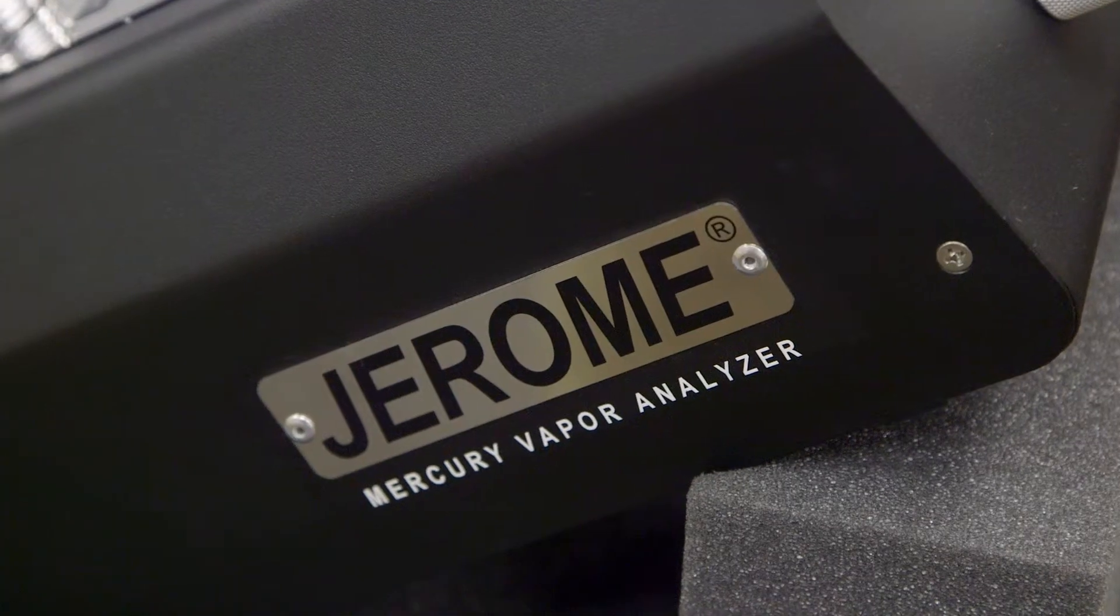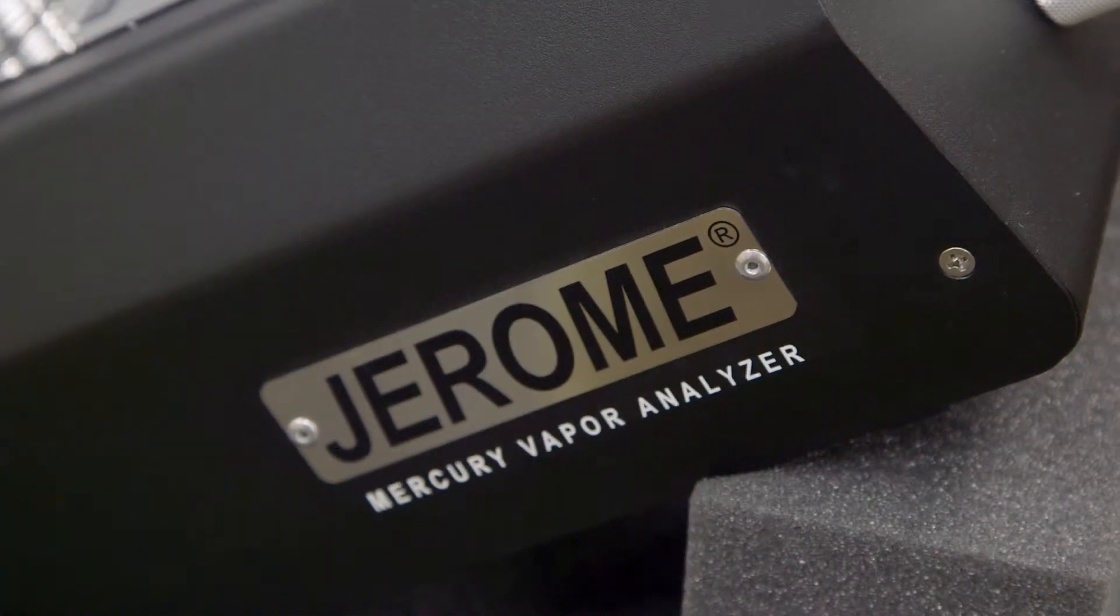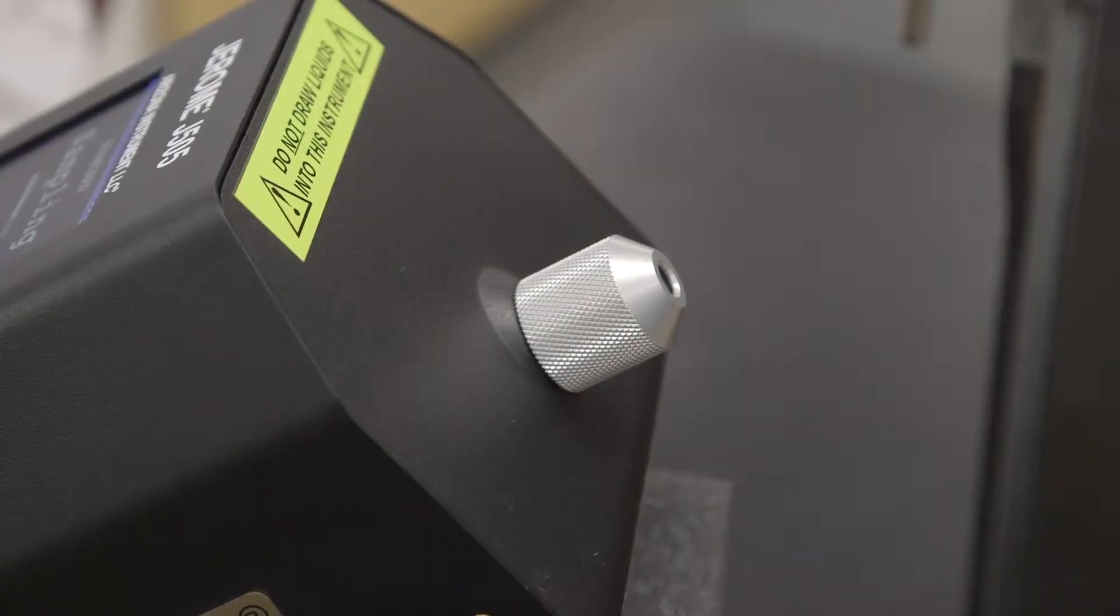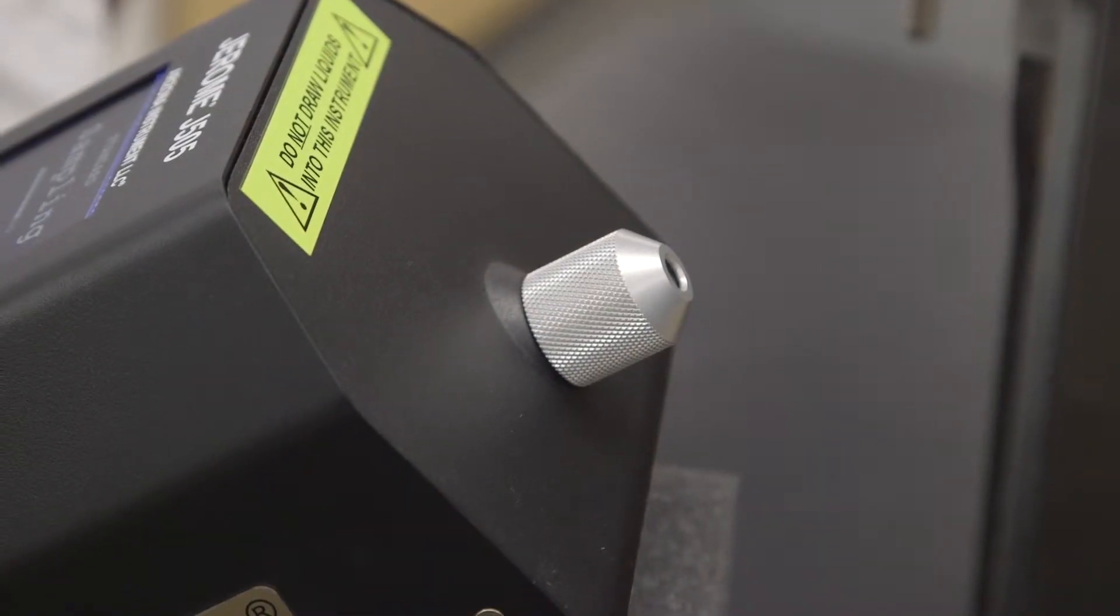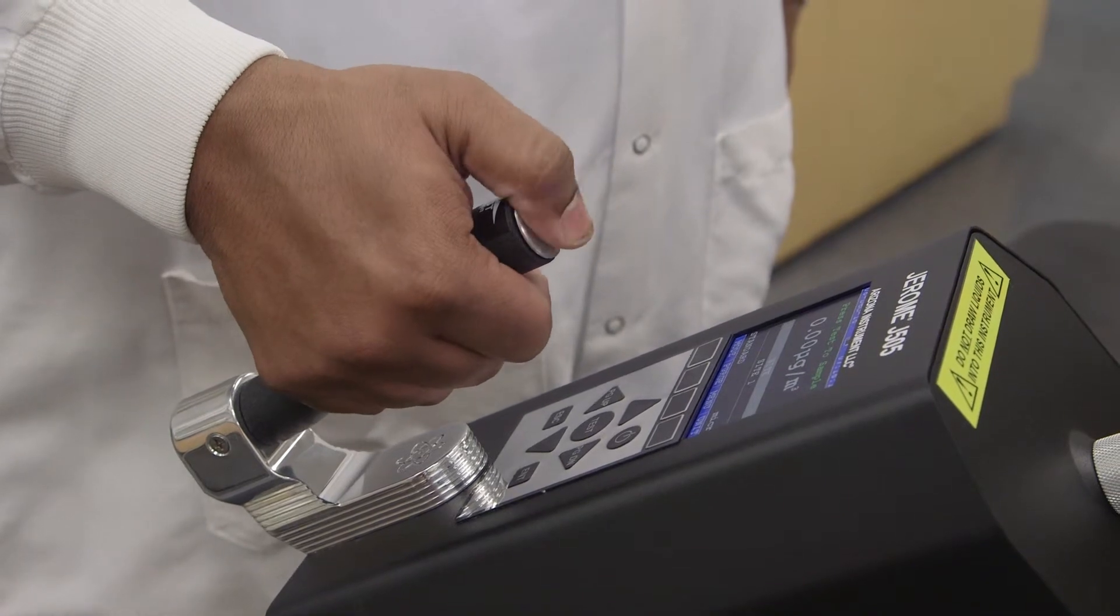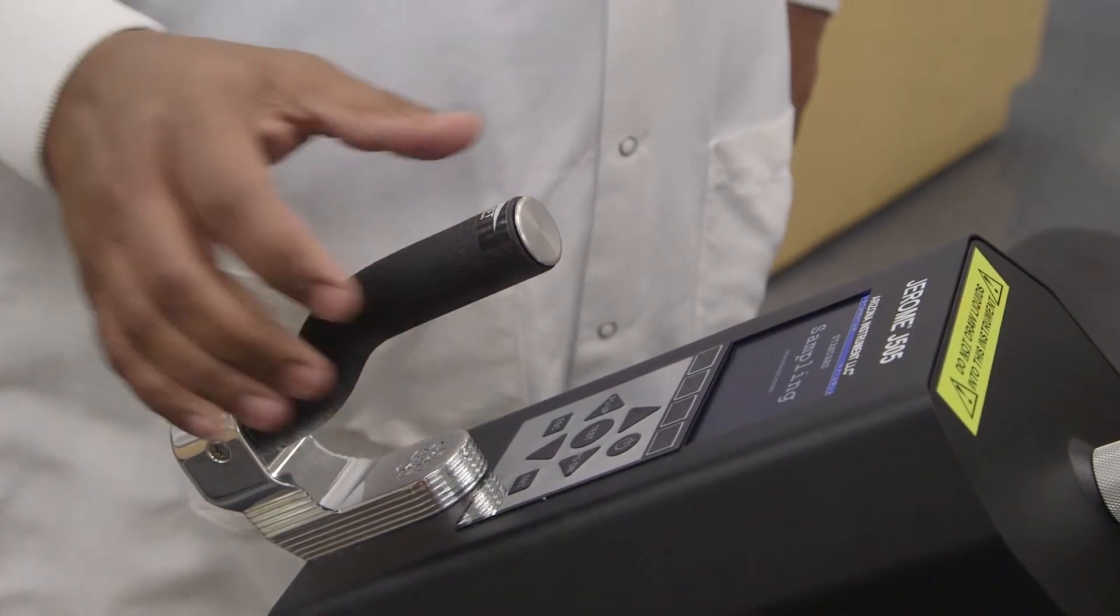The same technology is used in more expensive benchtop analyzers. This allows the detection cell to be simpler, smaller, lighter weight, and more durable than atomic absorption spectroscopy instruments.